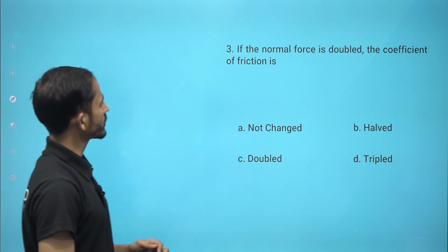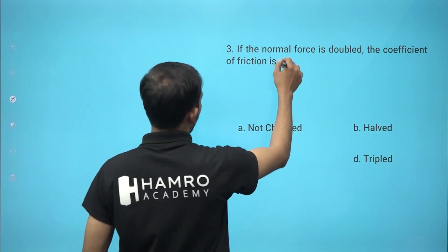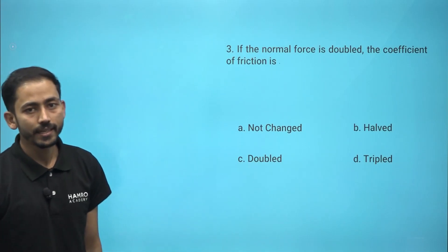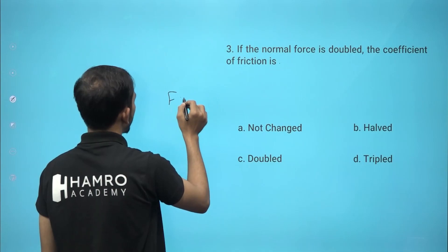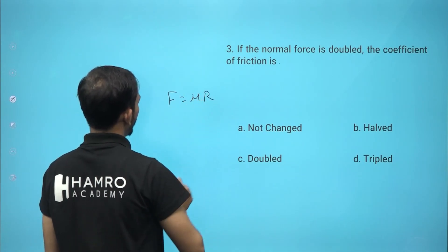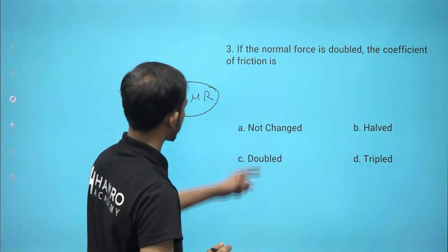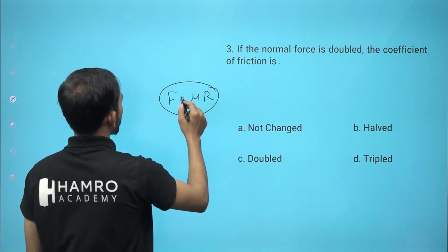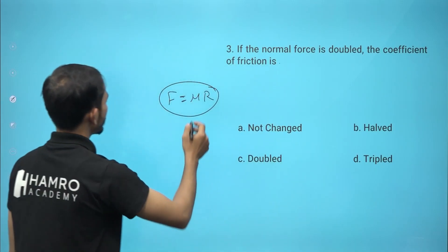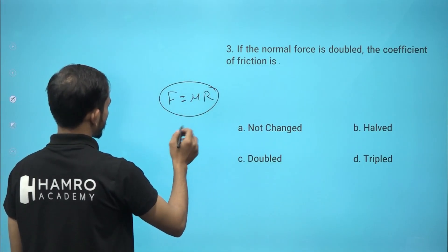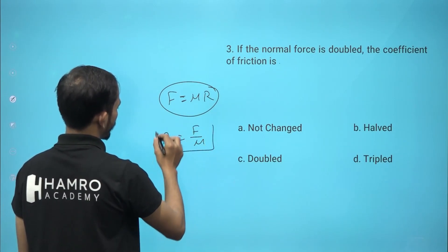Next question: if the normal force is doubled, what happens to the coefficient of friction? Let's look at the relation: friction force f equals mu times normal reaction R, so mu equals f divided by R.